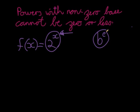And we said that a power with a non-zero base, we see the base is the 2, cannot be zero or less. In other words, 2 to the power of x will always be larger than zero.